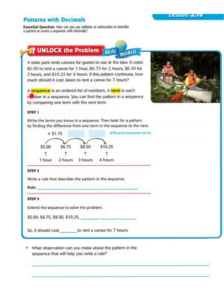A sequence is an ordered list of numbers. A term is each number in a sequence. You can find the pattern in a sequence by comparing one term with the next term.